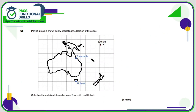Question five: each square represents 320 kilometers. Townsville to Hobart is 5 squares, so 5 times 320 — using a calculator — gives 1600 kilometers.